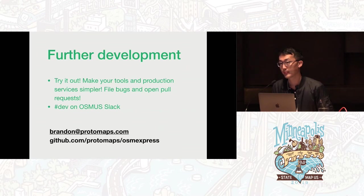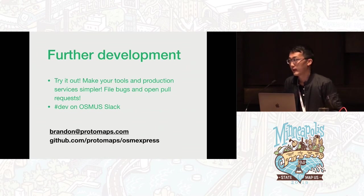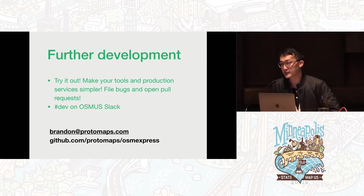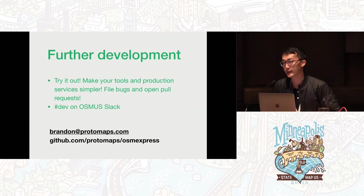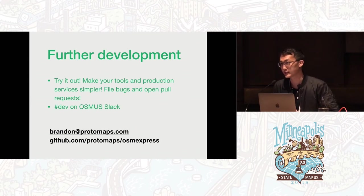Q: Can you query for a text-based query on name, attribution, or timestamp? A: It doesn't have any sophisticated indexing except for spatial. If you're going to query on a tag or something like a username, you would have to do a scan over all the objects. There are use cases where Overpass might still be better because it's quite a bit more sophisticated in how it handles tag indexes.